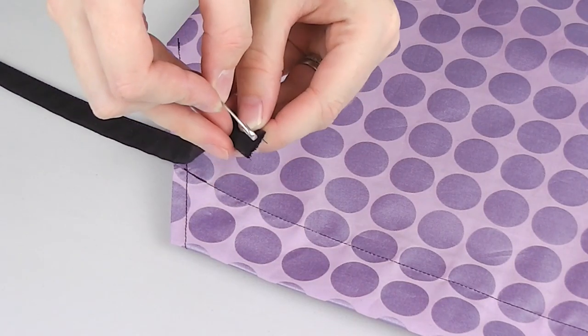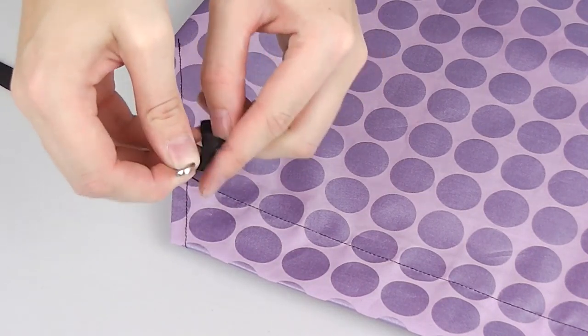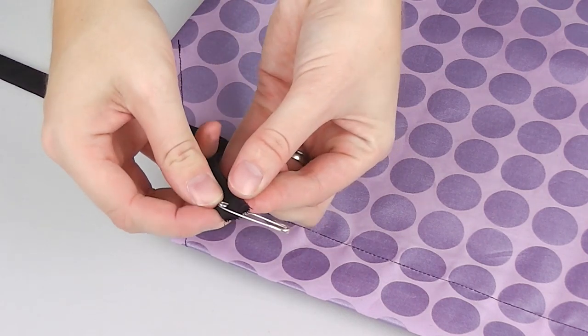To thread either your handmade ties or plain ribbon place a safety pin through one end of each piece and shimmy it through the neck seam.